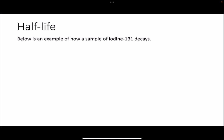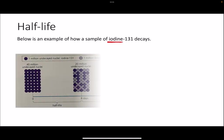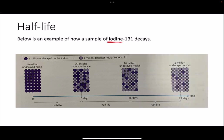We will take iodine-131 as an example. Let's say you have a sample of iodine-131, and it decays by beta emission in order to turn into xenon. The dark purple circles in the sample represent iodine, and the light purple circles will refer to xenon nuclei.